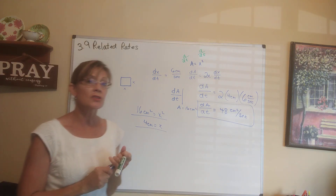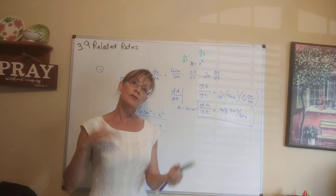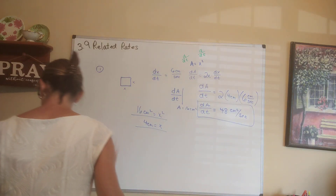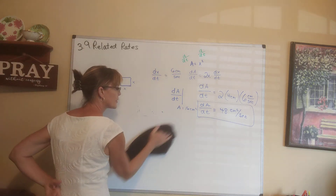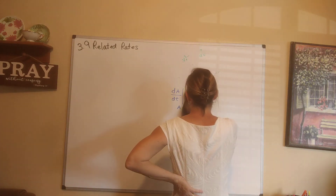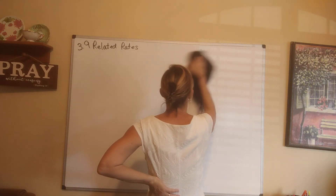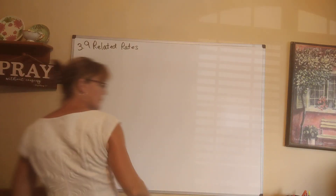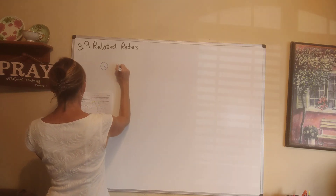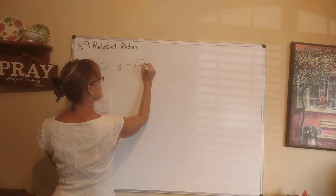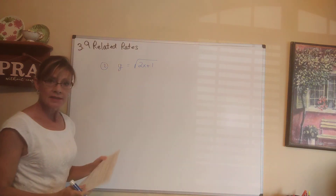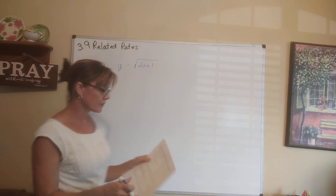The second exercise on our sheet is just practice taking derivatives with respect to time and plugging in numbers. It's not an actual word problem, just some practice. Number 2 says: suppose that we have y equals the square root of 2x plus 1, where x and y are functions of t. That means we have to use chain rule when we take a derivative.